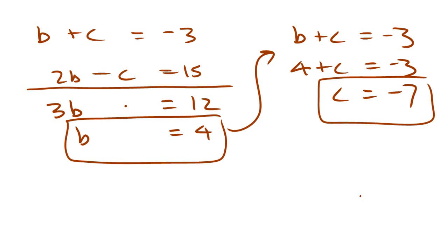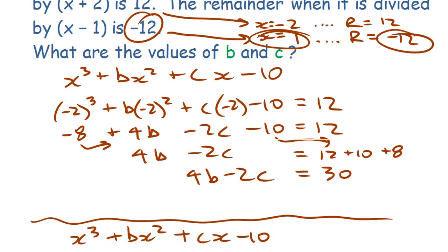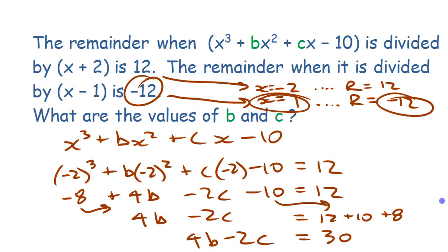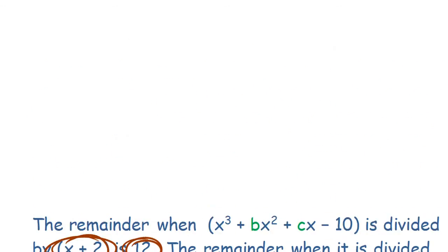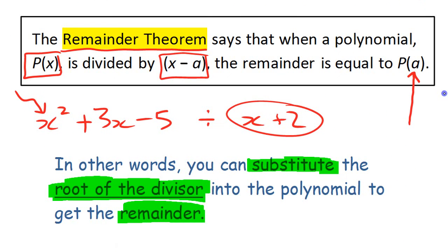You could write the polynomial out with those missing values filled in, but we found them using algebra and the Remainder Theorem. That's a pretty involved problem, but the key to being able to solve it is the Remainder Theorem — knowing that when you substitute in the root of the divisor, it gives you the remainder. That's it for the Remainder Theorem.